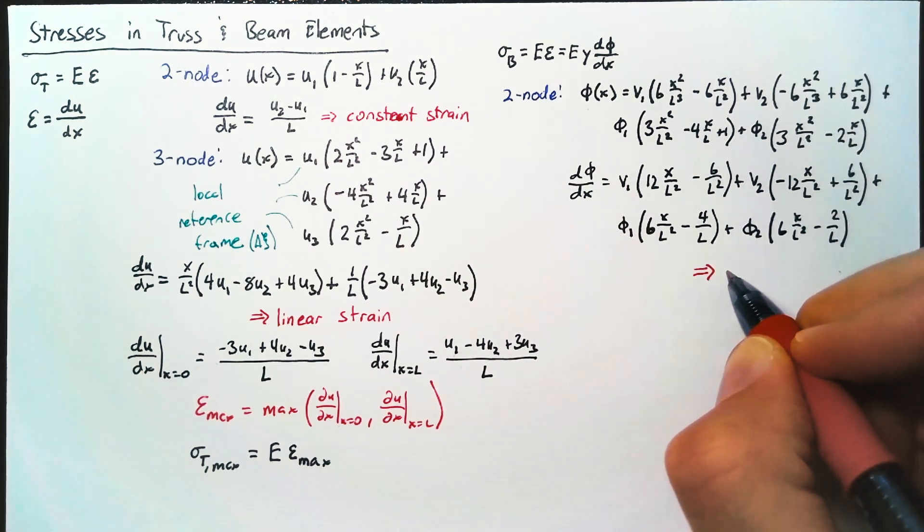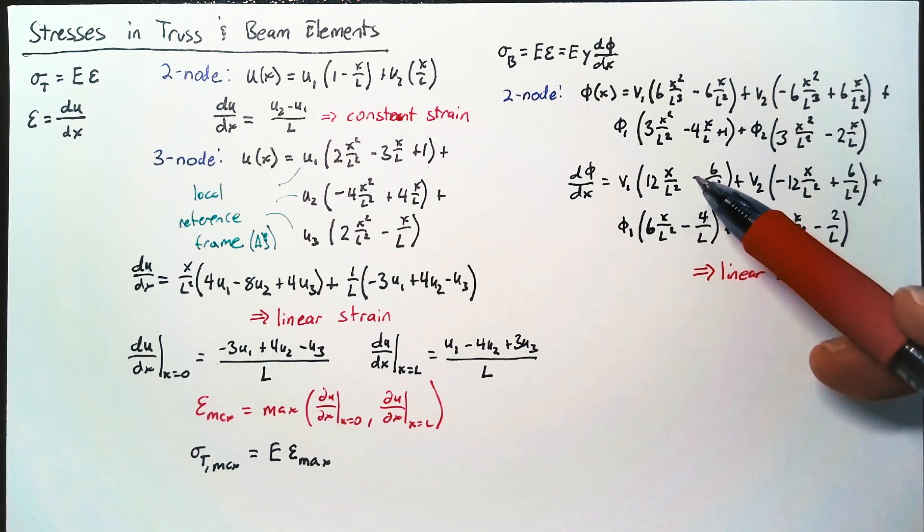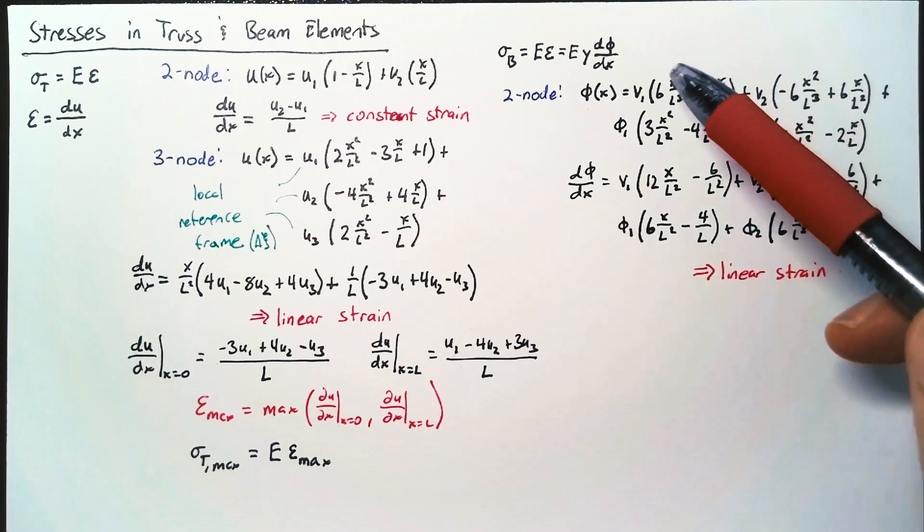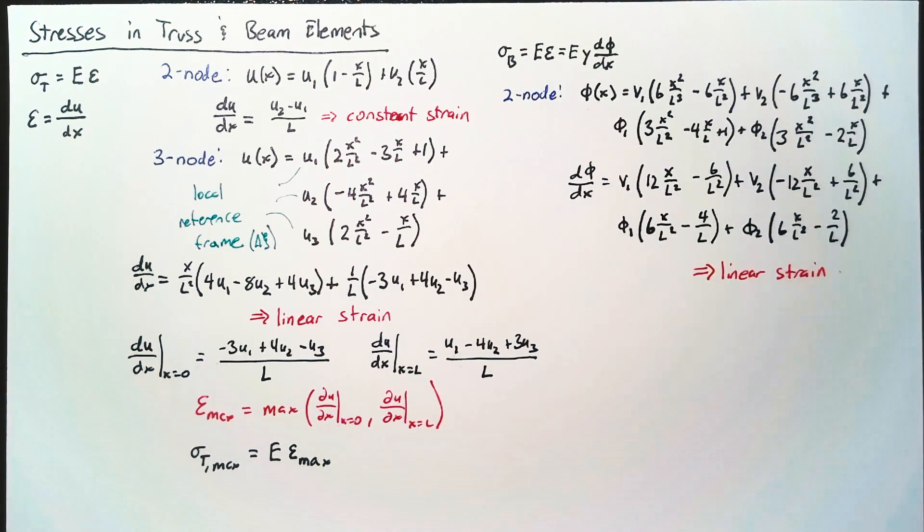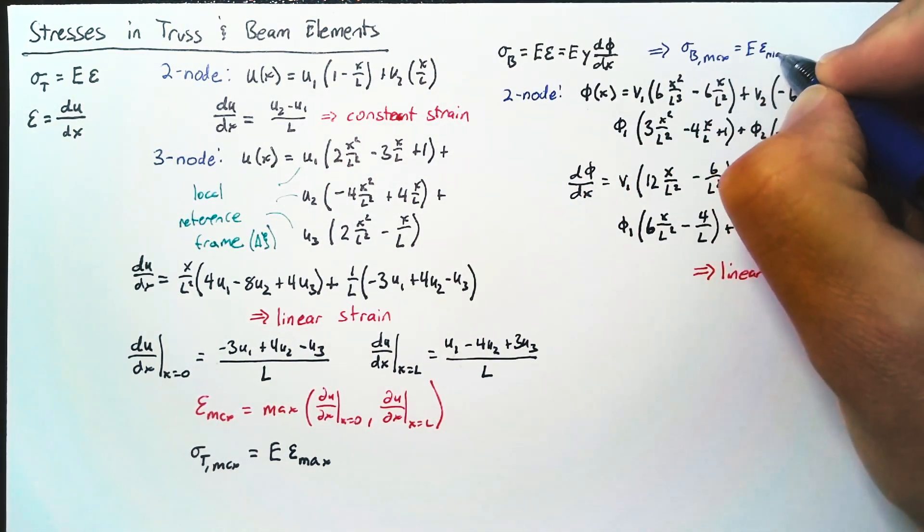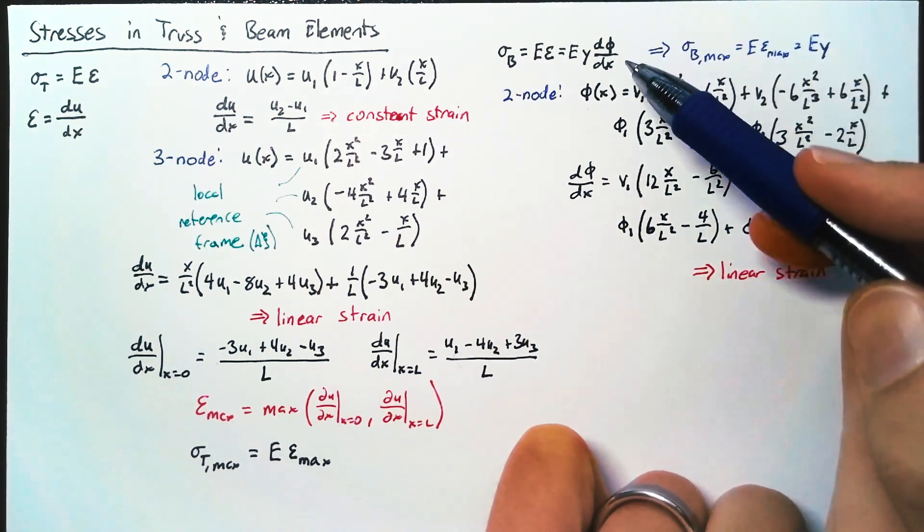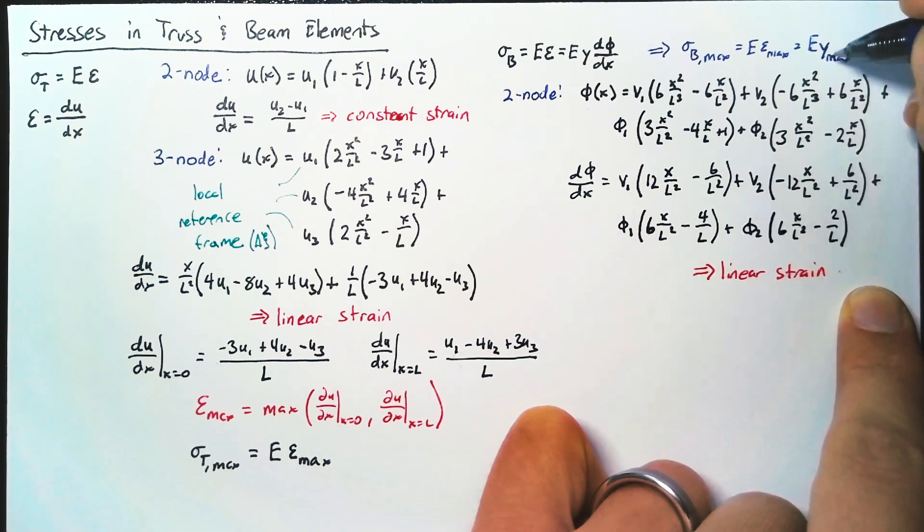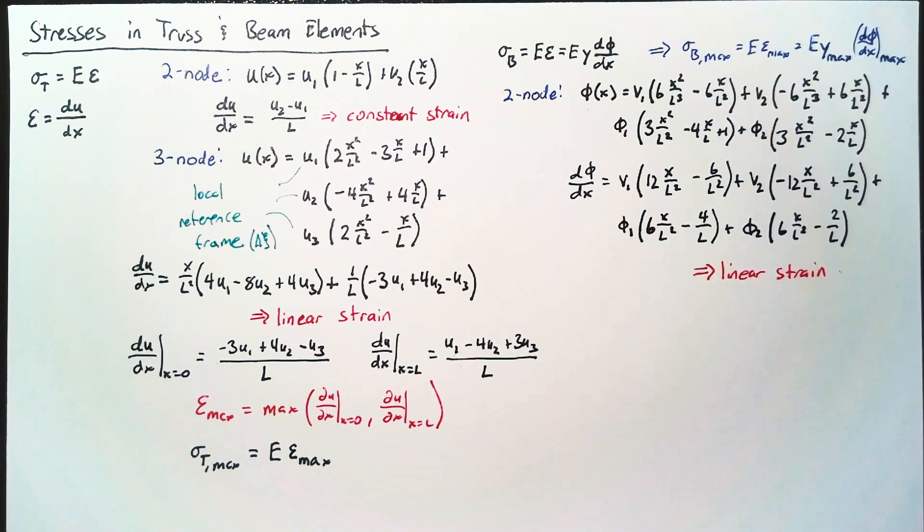So once again, we have linear strain. Because the highest order that we see in our d phi dx term is this single x. So we follow the same process where we find the maximum value of d phi dx in order to figure out our maximum strain. And in addition to the maximum d phi dx, we also look at the maximum distance from the centroid of our beam cross section. But this is just a property of our beam, so we don't need to do any math for that right now.